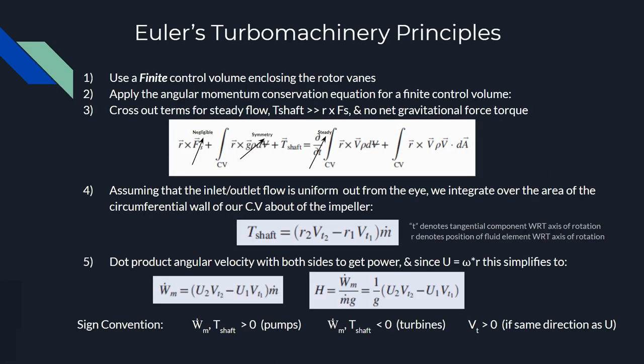The governing equations for these machines are Euler's turbomachinery principles. We use a finite control volume enclosing the rotor vanes, and then we apply conservation of angular momentum, and we assume that the viscous losses are low and steady flow and the gravitational force balances out. We get this equation below for the torque in the shaft, which relates the inlet conditions with the outlet conditions.